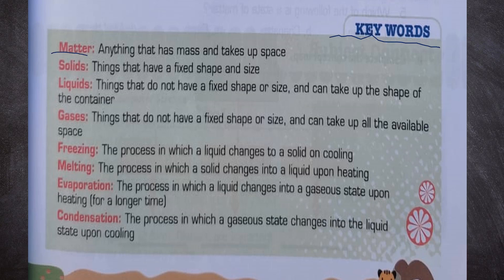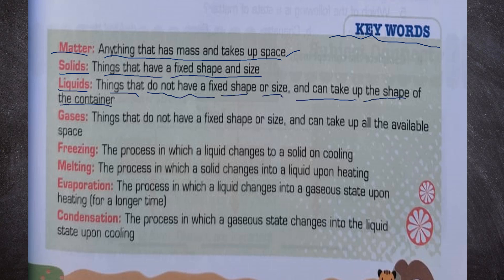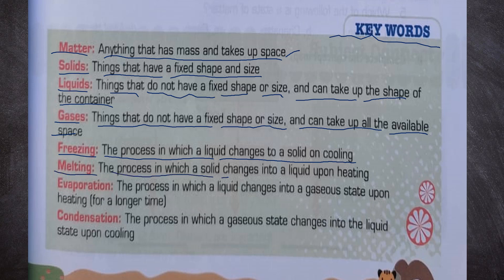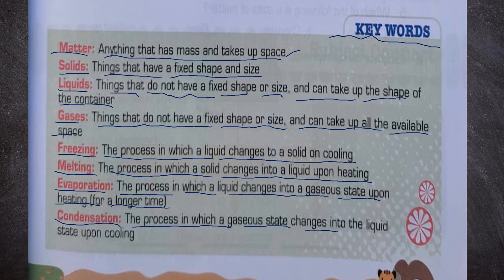Now we have keywords. Matter: anything that has mass and takes up space is known as matter. Solids: things that have a fixed shape and size. Liquids: things that do not have a fixed shape or size and can take up the shape of the container. Gases: things that do not have a fixed shape or size and can take up all the available space. Freezing: the process in which a liquid changes to a solid on cooling. Melting: the process in which a solid changes into a liquid upon heating. Evaporation: the process in which a liquid changes into a gaseous state upon heating for a longer time. Condensation: the process in which a gaseous state changes into the liquid state upon cooling.